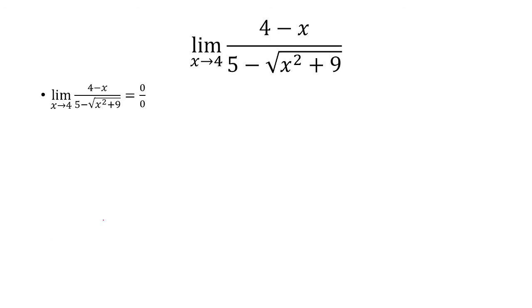When I plug in x equals 4, I get 0 on the top and 0 on the denominator. So this is indeterminate form, and what I'm going to do is multiply by the conjugate of the denominator.